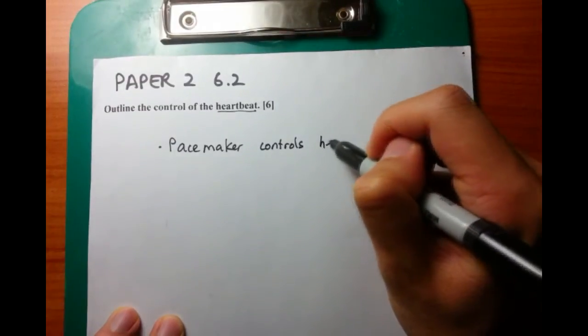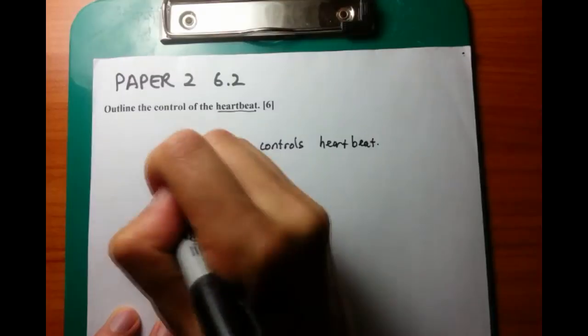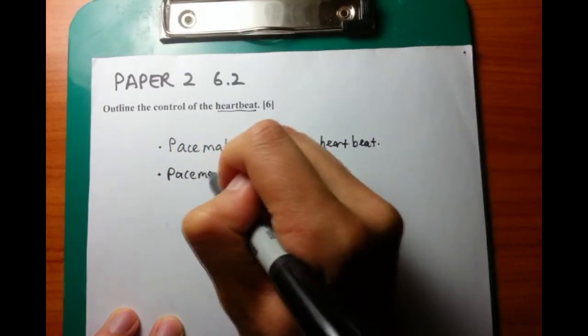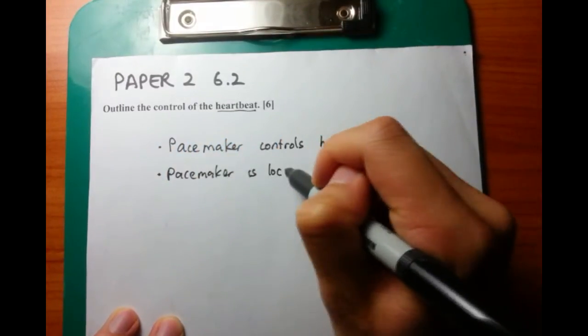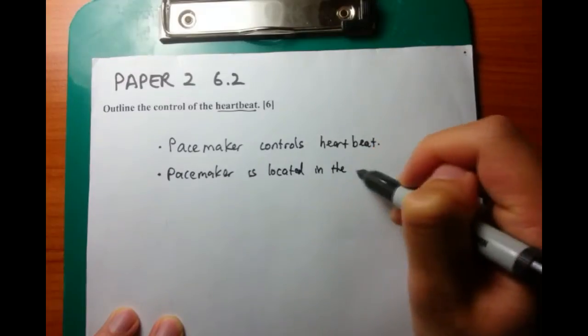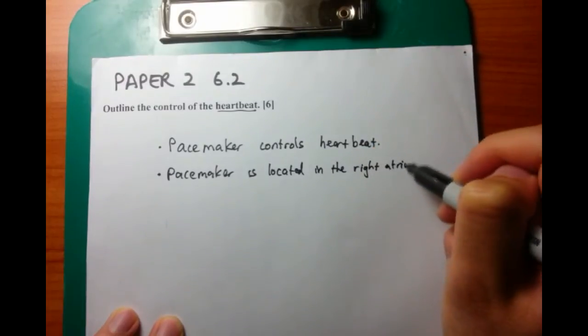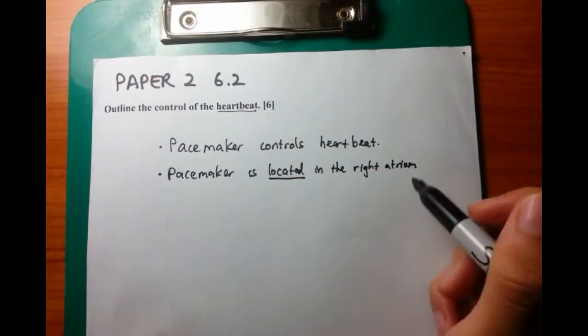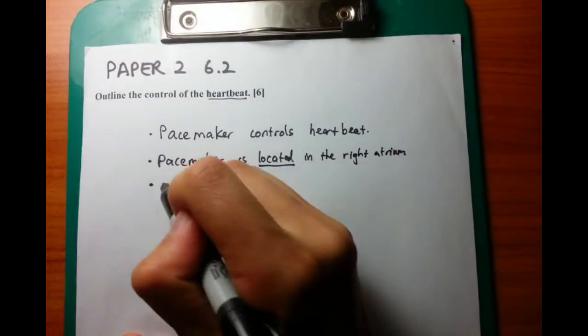You want to talk about, first of all, the area of the heart which is called the pacemaker, which controls the heartbeat. This pacemaker is not a mechanical pacemaker, but just a bit of tissue which controls electrical impulses. It's located in the right atrium.